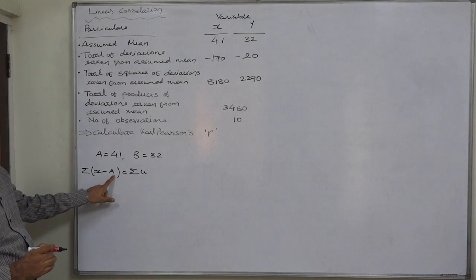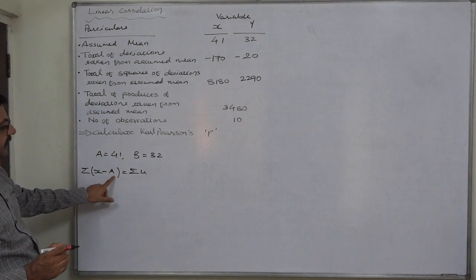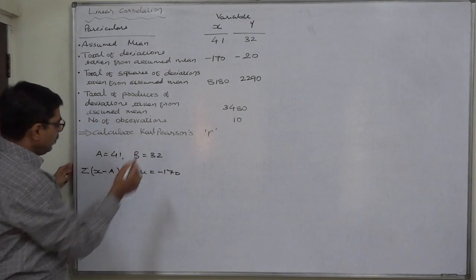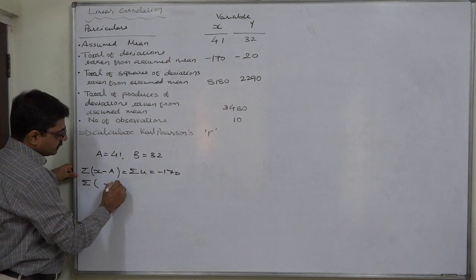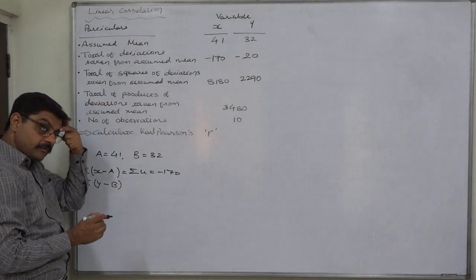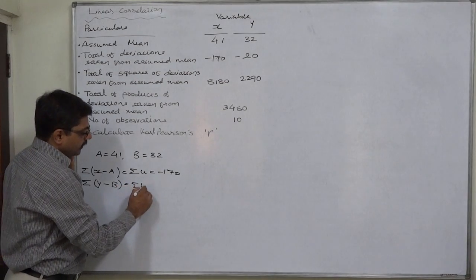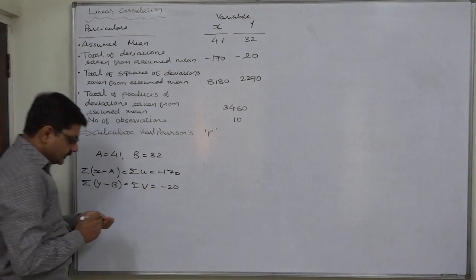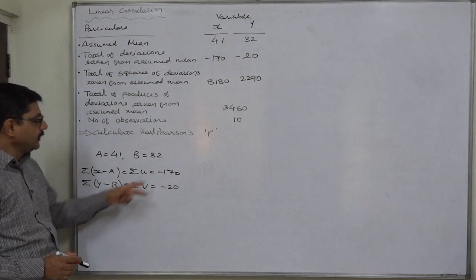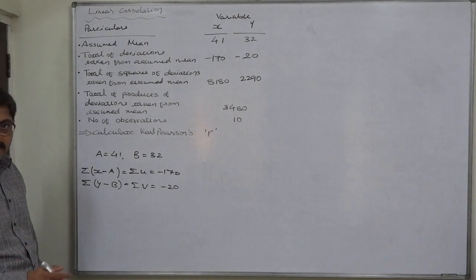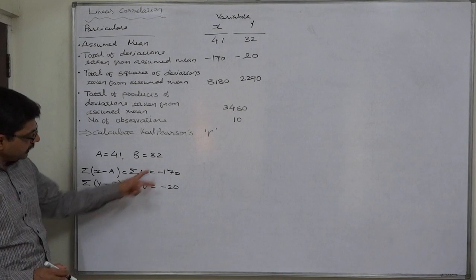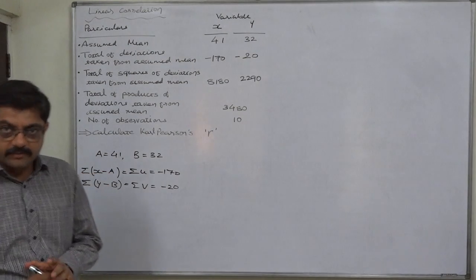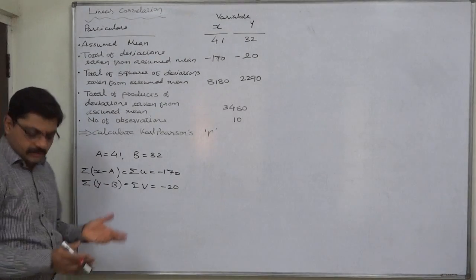Total of deviations taken from assumed mean for x means sigma u, that is minus 170. Similarly for y, total of deviations taken from assumed mean — y minus b — we know it as sigma v, that is minus 20. Since these are not deviations from the arithmetic mean, the total need not be zero. Both totals are negative, meaning the assumed means are greater than the arithmetic means, but that fact has no value in the solution of this case.